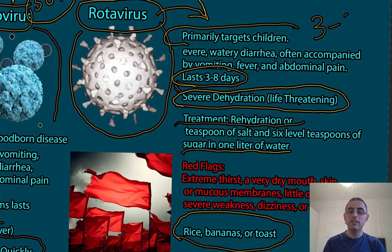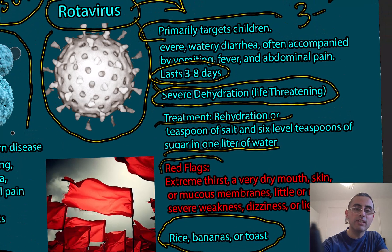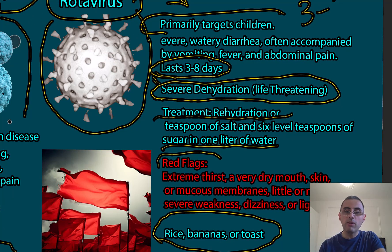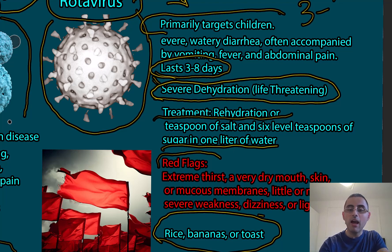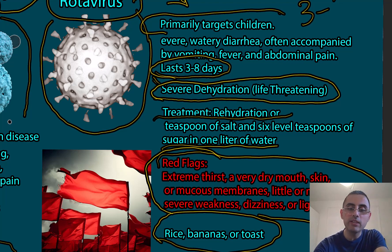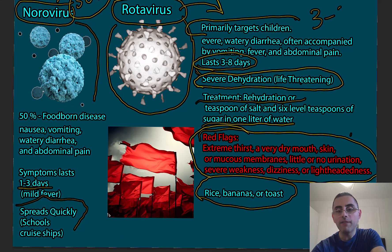Children should continue eating if possible — rice, bananas, or toast are friendly foods. Avoid colas and high-sugar drinks because they can increase diarrhea. We should also know the red flags for rotavirus infection: signs of extreme dehydration include a very dry mouth, dry skin or mucous membranes, little or no urination, severe weakness, dizziness, or lightheadedness. These are red flags requiring emergency treatment.